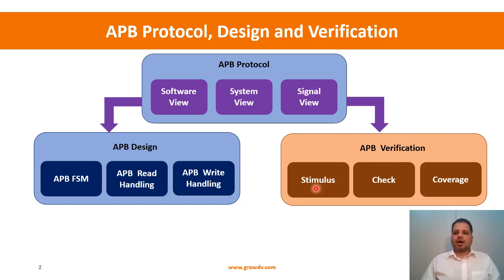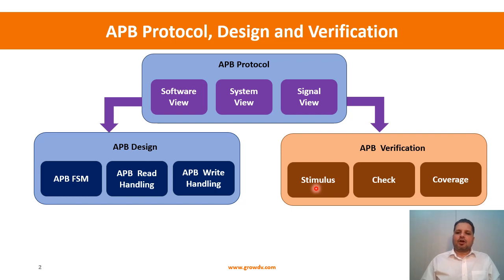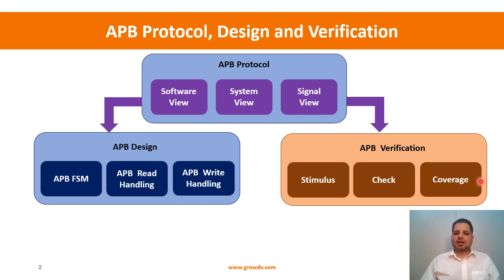We will look at verification from three points of view, starting from the stimulus perspective. We will use UVM — write a UVM sequence and sequence item, create an agent containing your sequencer and driver to drive the APB interface, and have a monitor to monitor the APB interface. We will also show how to write an adapter — we won't go into full RAL detail, but at least how to write an adapter for your APB agent. Then we'll look at how to write various assertions on the APB interface and how to do basic functional coverage.